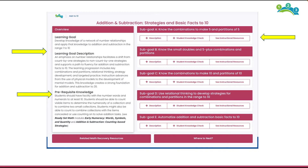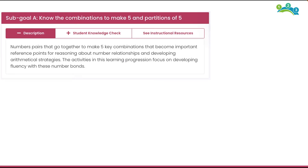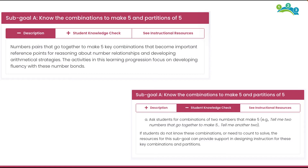Each module is broken down into a learning progression through four to five sub-goals. These sub-goals provide an entry point for students at various stages in the overall learning of the module. A sub-goal description and student knowledge checks are provided within each sub-goal to help make informed decisions of where to begin using the instructional resource.